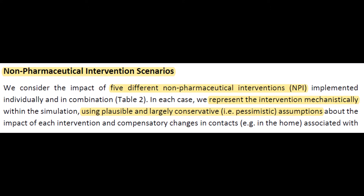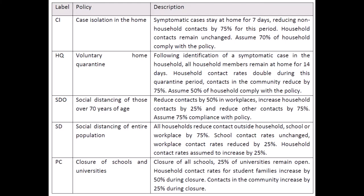For the NPIs themselves — the thing this paper focuses so heavily on in the title — they take five types and implement them separately and in conjunction with each other. They err on the side of caution and suggest a more pessimistic outlook on how effective each policy will be, since people do not like being told what to do. They've provided a table outlining each policy. Case isolation in the home: when you know you have it, you stay home. Voluntary quarantine: when someone in your house has it, you all stay home. These two fall into the category of always on — there is no trigger; they're on by default. Then there is social distancing for age 70 and up, as well as social distancing for all.